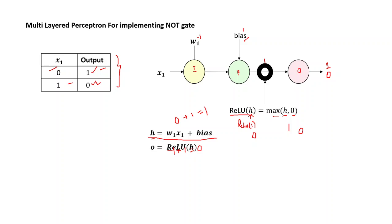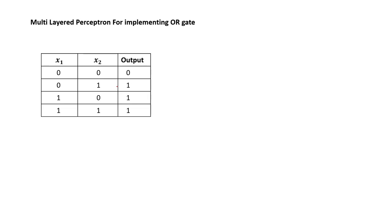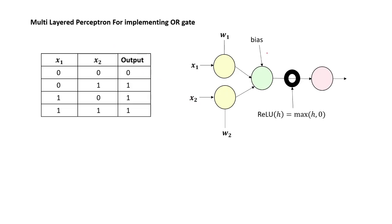Moving on, I will show you how to implement the multilayer perceptron for an OR gate. An OR gate has two inputs, X1 and X2, and whenever any one of the inputs is one, the output will be one. When both are zero, the output will be zero. This is the truth table of OR gate. This is going to be your multilayered perceptron for this OR gate — there are two nodes in the input layer, one for X1 and one for X2, with weights W1 and W2. There is a bias acting on the hidden layer, then the activation function, and finally you get the output.